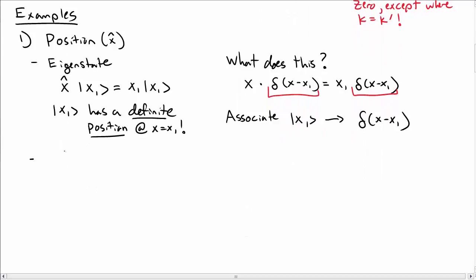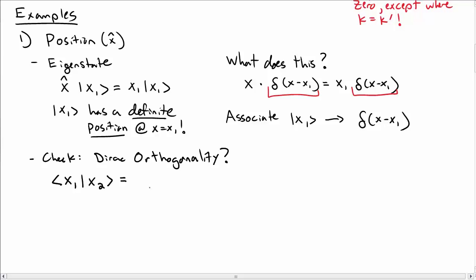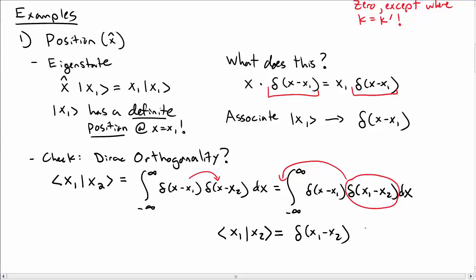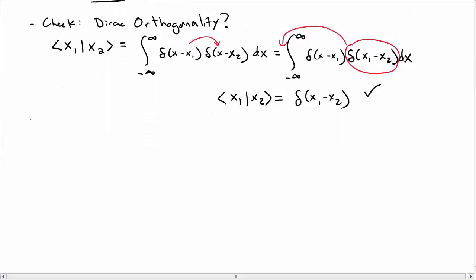Let's check that this makes sense by verifying Dirac orthogonality. The inner product between eigenstates x1 and x2 is the overlap integral from negative infinity to infinity of delta of x minus x1 times delta of x minus x2, integrated over x. The left delta function acts on the right one, replacing x with x1, giving delta of x1 minus x2 times the integral of a delta function, which equals 1. So overall we get delta of x1 minus x2 — exactly Dirac orthogonality.